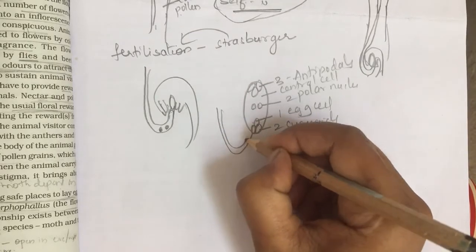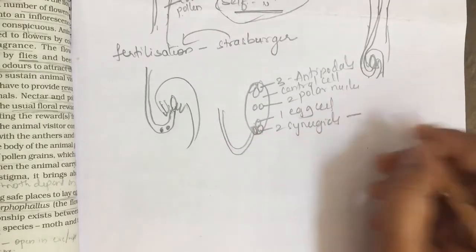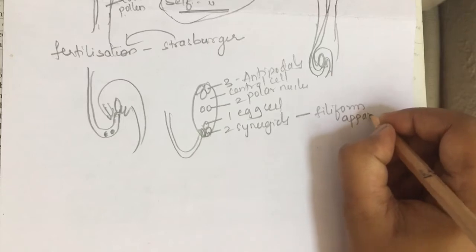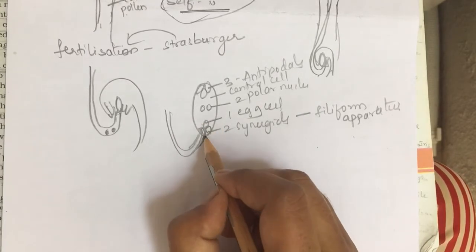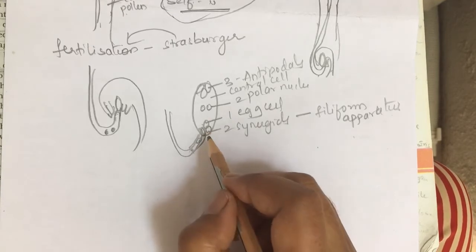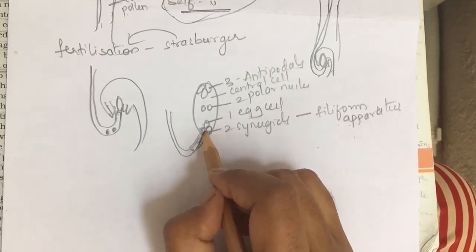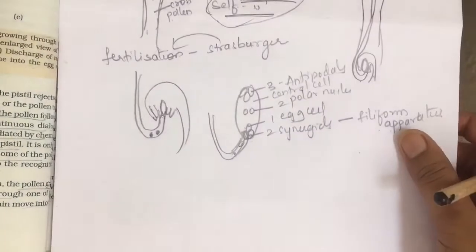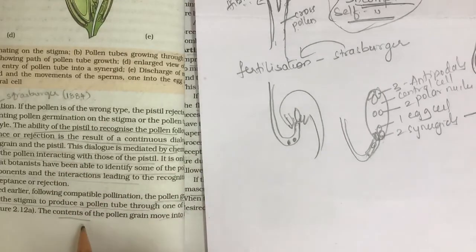The pollen tube has reached here. The synergids consist of the filiform apparatus — there is a presence of filiform apparatus inside the synergids — which guides the pollen tube to enter inside through the micropyle. The two male gametes are then released inside, and fertilization takes place. The filiform apparatus guides the pollen tube to enter from the micropyle direction only, and reach inside where fertilization takes place. This complete detailed information about pollen-pistil interaction is given here.